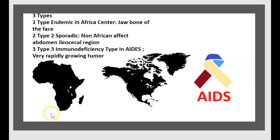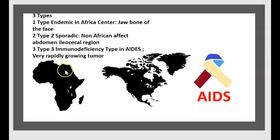There are three types. The first type is endemic — endemic in African centers and affects the jawbone of the face. The second type is sporadic or non-African, affecting the abdomen in the ileocecal region. The third type is the immunodeficiency type.